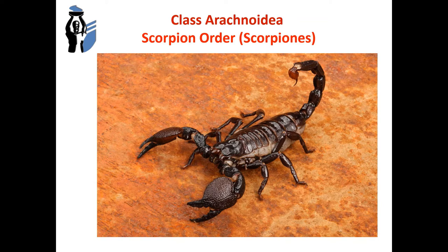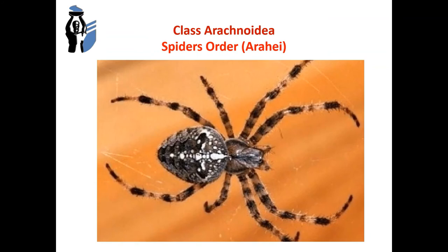Scorpions are viviparous and characterized by care for offspring. Class Arachnoidea, order Araneae — spiders. Representatives called Karakurt: only females are poisonous. The ducts of the venomous glands open at the base of the chelicerae. The poison of Karakurt is dangerous for humans. After the bite, there is severe pain and symptoms of intoxication — pain radiates to the abdomen, lower back, and chest. There is chills, numbness in hands and feet. With increasing intoxication and damage to the nervous and cardiovascular systems, death is possible.